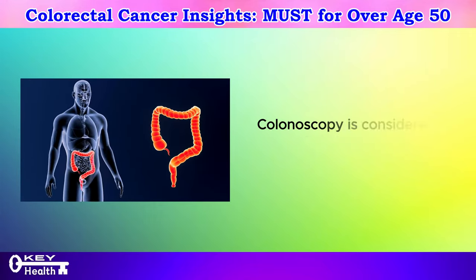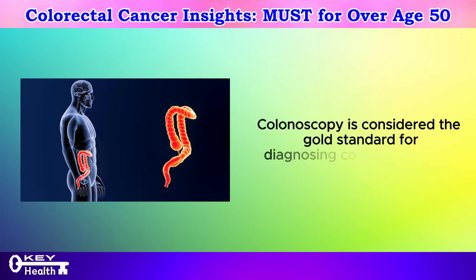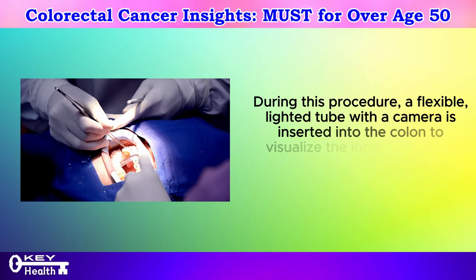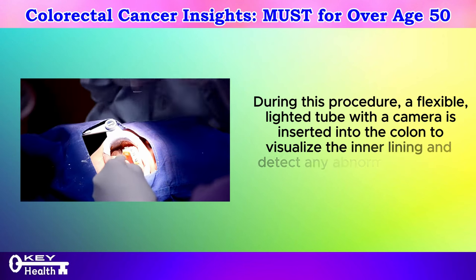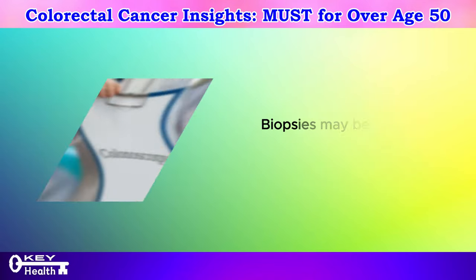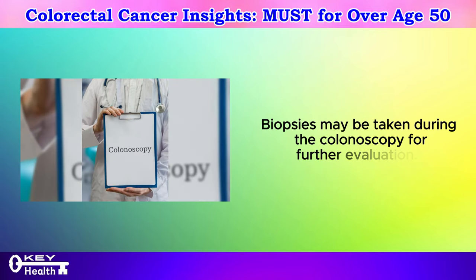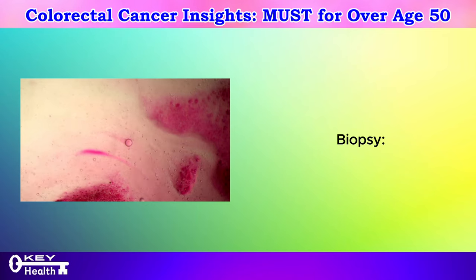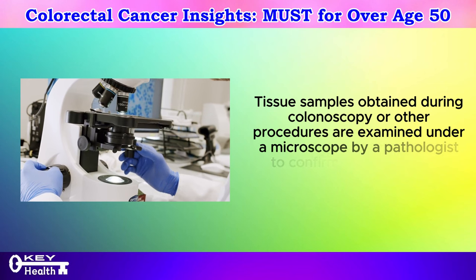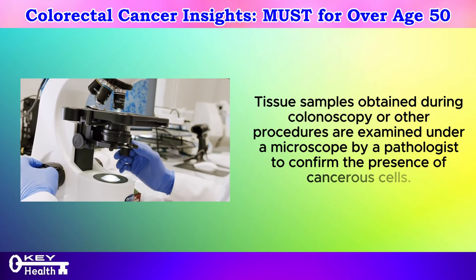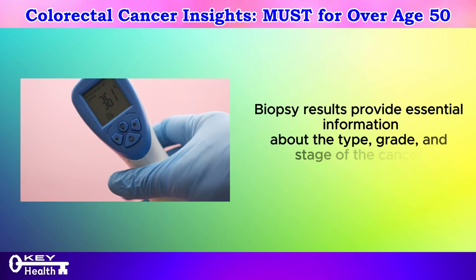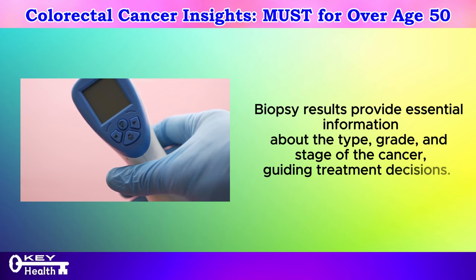Step 3: Colonoscopy is considered the gold standard for diagnosing colorectal cancer. During this procedure, a flexible, lighted tube with a camera is inserted into the colon to visualize the inner lining and detect any abnormalities, such as polyps or tumors. Biopsies may be taken during the colonoscopy for further evaluation. Step 4: Biopsy — tissue samples obtained during colonoscopy or other procedures are examined under a microscope by a pathologist to confirm the presence of cancerous cells. Biopsy results provide essential information about the type, grade, and stage of the cancer, guiding treatment decisions.